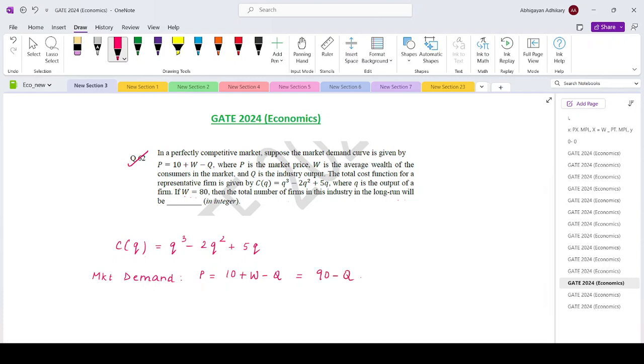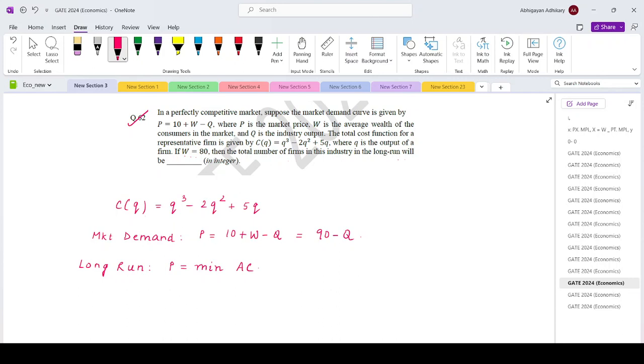Now in the long run, what is the characteristic? In the long run, the price in the competitive market equals the minimum average cost. So let us find out the minimum average cost first.